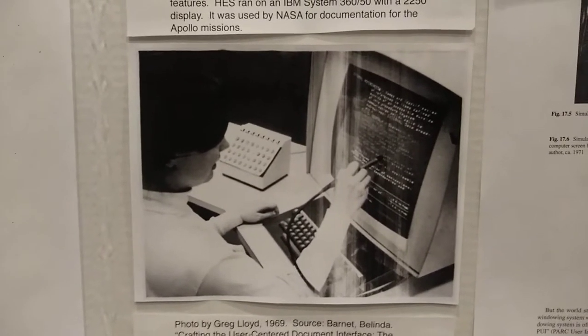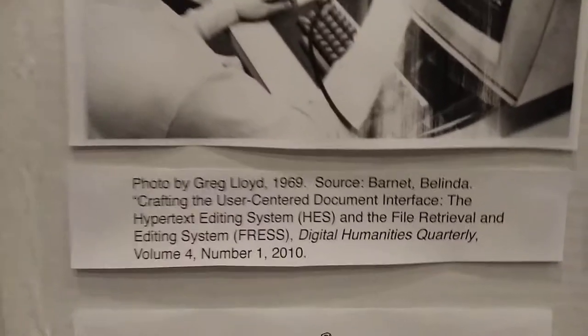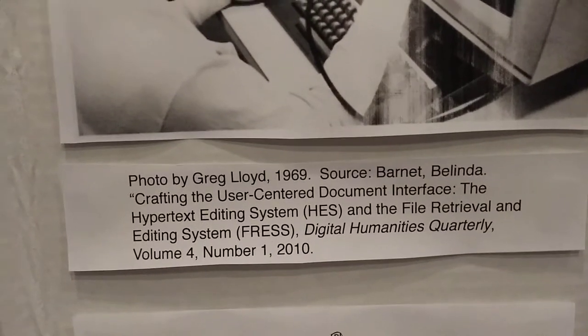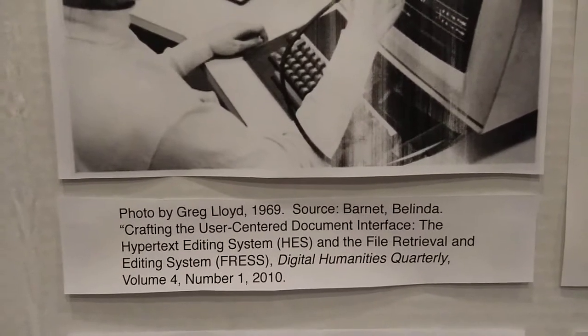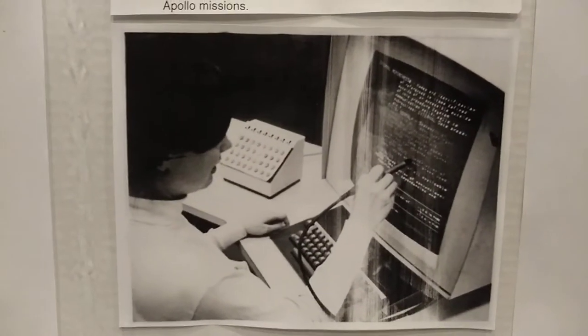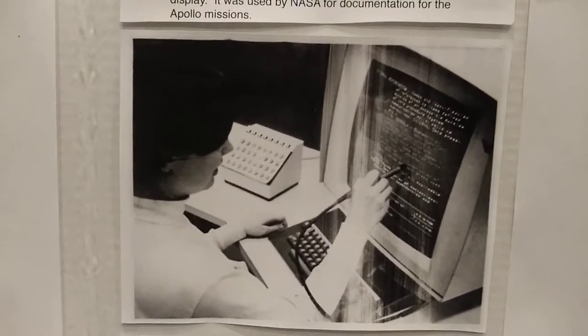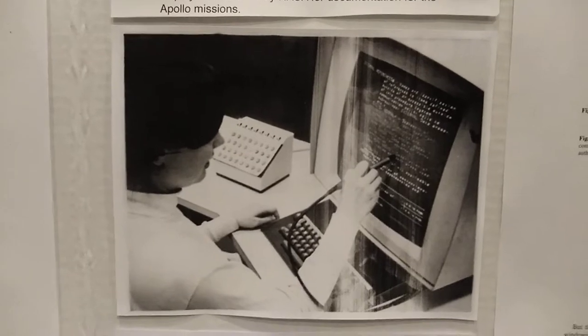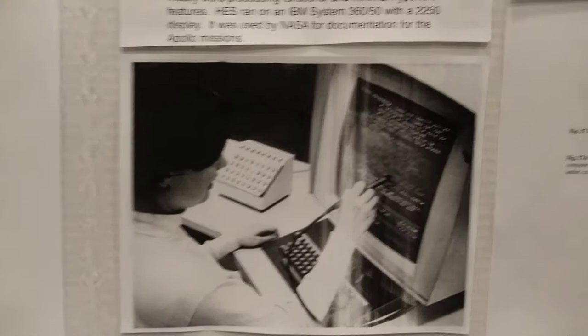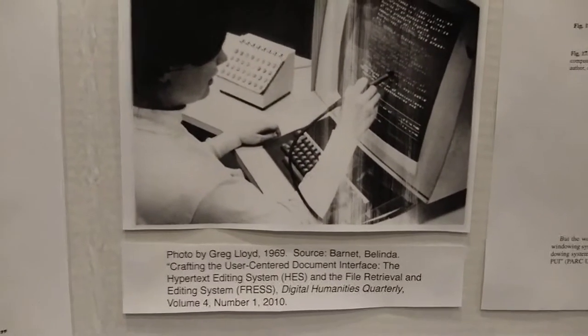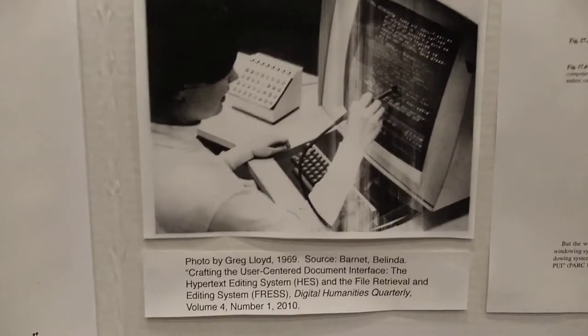This is a photo from an article by Belinda Barnett — an excellent article giving some background to the HES and its next release called FRESS, from Digital Humanities Quarterly, 2010. This photo was taken in 1969. You could see a user using a light pen to select text, and there were some sophisticated features. It had jump links — one-way jump links, not bi-directional links. The FRESS system had bi-directional links so you could go back. Ted is known for inventing the back button.